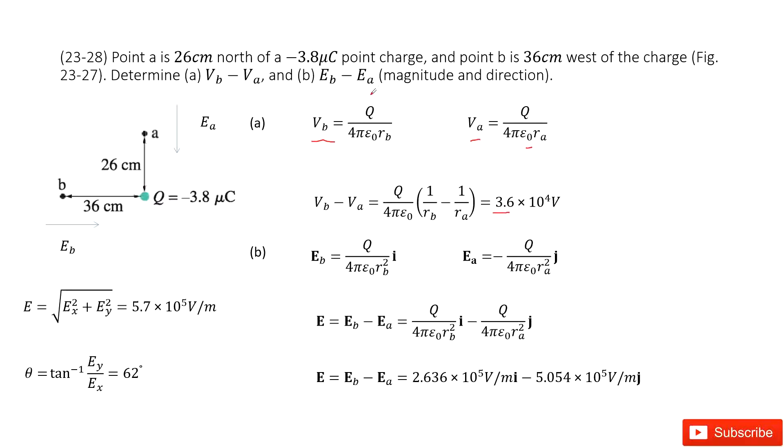The next part is to find the difference between the electric field at position B and at position A. As we know, the electric field is a vector. Because this point charge carries negative charge, the electric fields will be pointing inward to it.